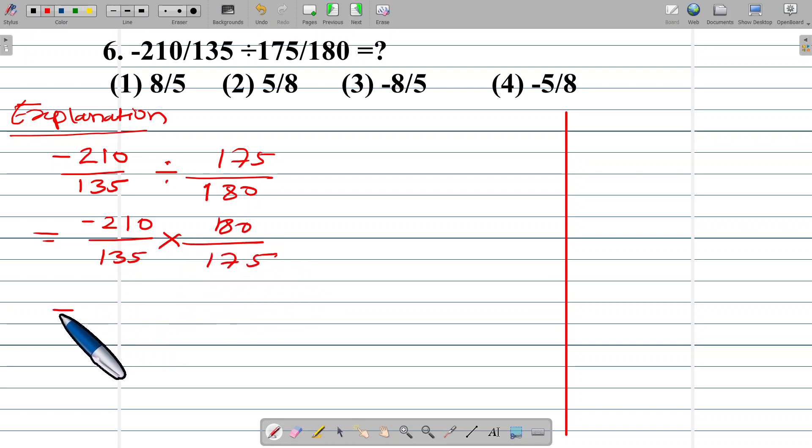210 means 7 into 30, 135 means 15 into 9.